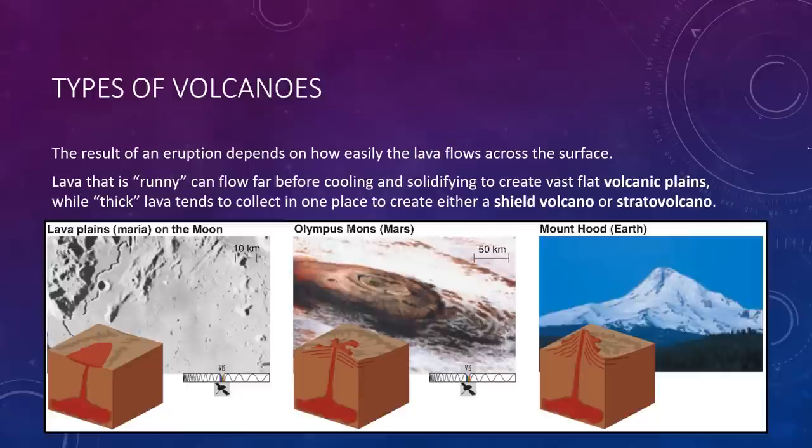Not all volcanoes are the same. We do have several types. The result of an eruption depends on how easily the lava flows around the surface. Lava that is runny can flow far before it cools and solidifies, while thicker lava tends to collect in one place. Broadly speaking, lava can shape three different types of volcanic features. The runniest lavas flow far and flatten out before solidifying, creating vast volcanic plains. You can kind of see that here in the left. It looks like a fairly flat region. Magma just comes up to the surface and basically fills up like a pool.